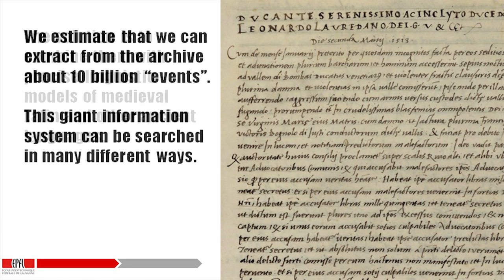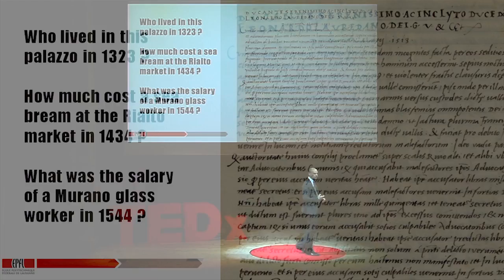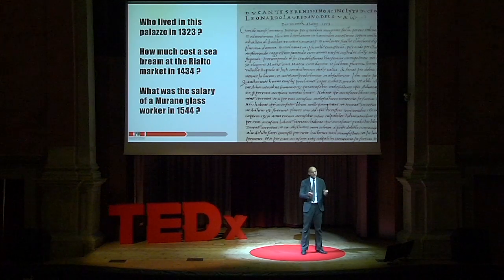If we reach that stage, we can extract events from these documents — probably 10 billion events can be extracted from this archive. And this giant information system can be searched in many ways. You could ask questions like: who lived in this palazzo in 1323? How much did a sea bream cost at the Rialto market in 1434? What was the salary of a glass maker in Murano, maybe over a decade? You can ask even bigger questions, because it will be semantically coded.